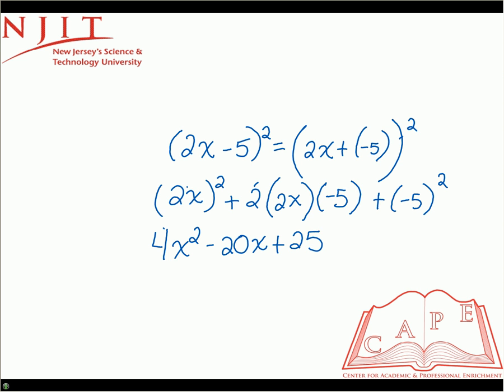Okay, so we have no terms to collect. And here's our final answer: 4x squared minus 20x plus 25.